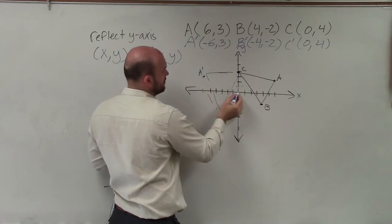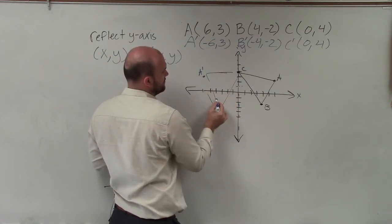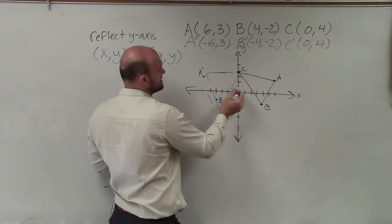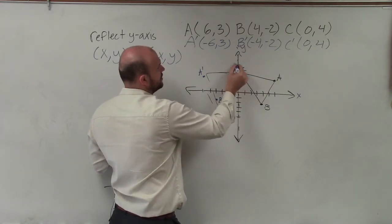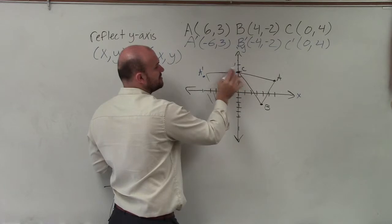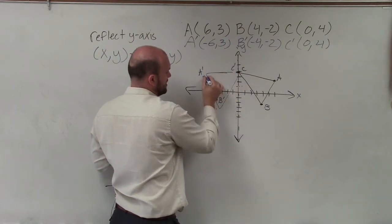B is at negative 4, negative 2, 1, 2, 3, 4, negative 2. And c is at 0, 4. So the pre-image and the image have the exact same coordinates. That's b prime.